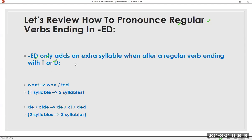Let's review how to pronounce regular verbs ending in ED. ED only adds an extra syllable when after a regular verb ending with a T or D sound. For example: want, wanted — one syllable becomes two syllables. Decide, decided — it has a D sound, two syllables becomes three syllables. Want, wanted. Decide, decided. Wanted, decided. You can also say: wanted.